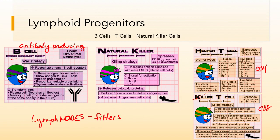Helper T cells and killer T cells — also known as cytotoxic T cells — are found in the lymph node as well. B cells are introduced to an antigen through phagocytosis, whereas T cells are introduced through antigen presentation. Natural killer cells are found in circulation, are part of the interferon response, and take part in viral reactions and in a reaction called an ADCC, which will be covered in another lecture.